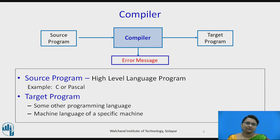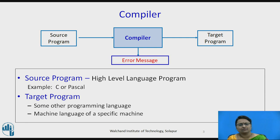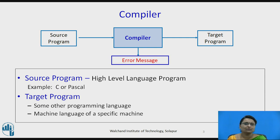The compiler is usually reading the source program and generating the target program, and if any errors are there, it is showing those errors. In the source program, the format is in a high level language — say C programming language or Pascal — any kind of high level language is given as input to the compiler. The compiler generates the target program in machine language, which is specific to the machine, so a machine-dependent target program is usually generated.